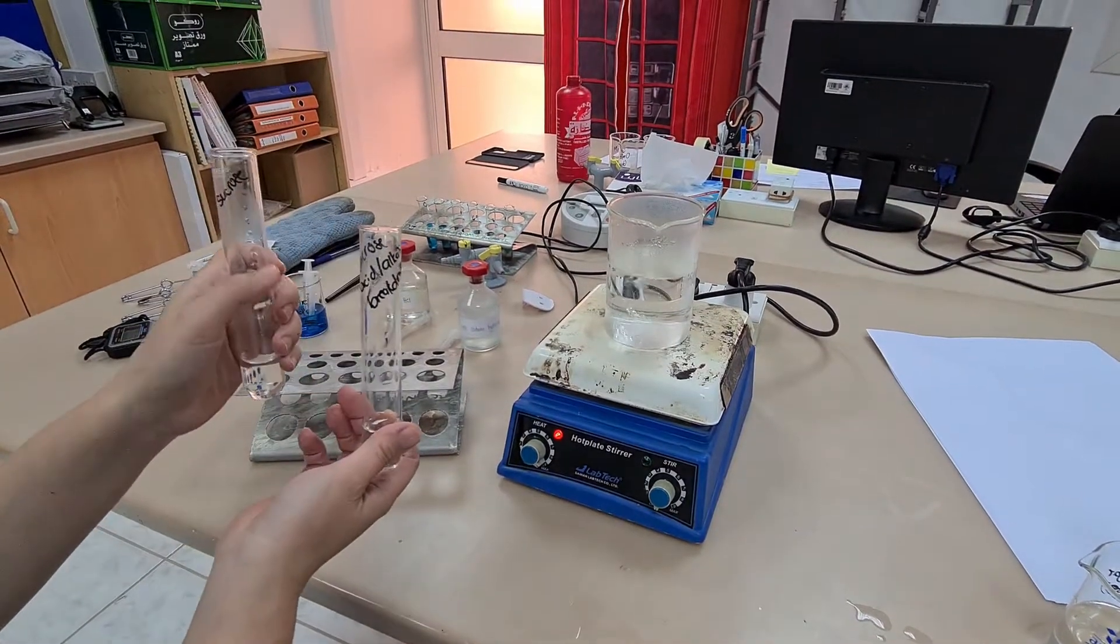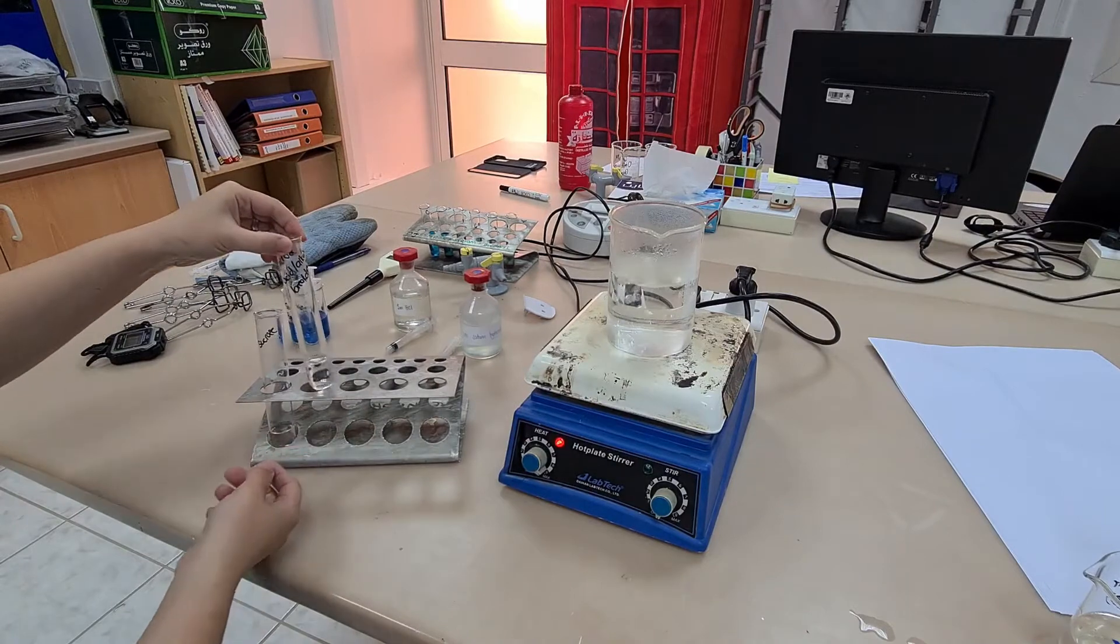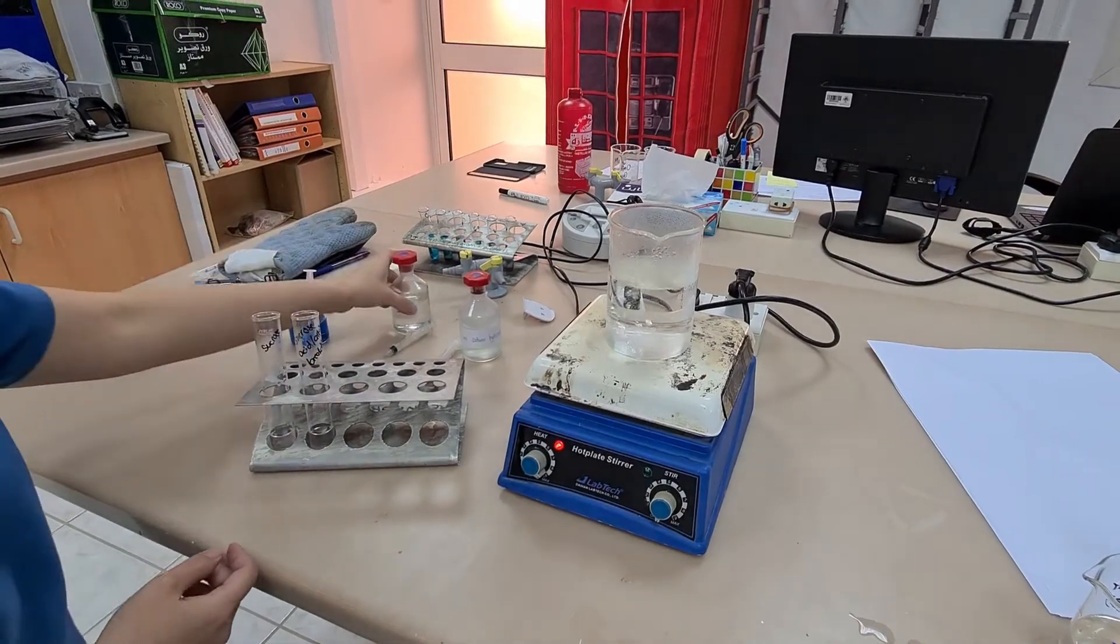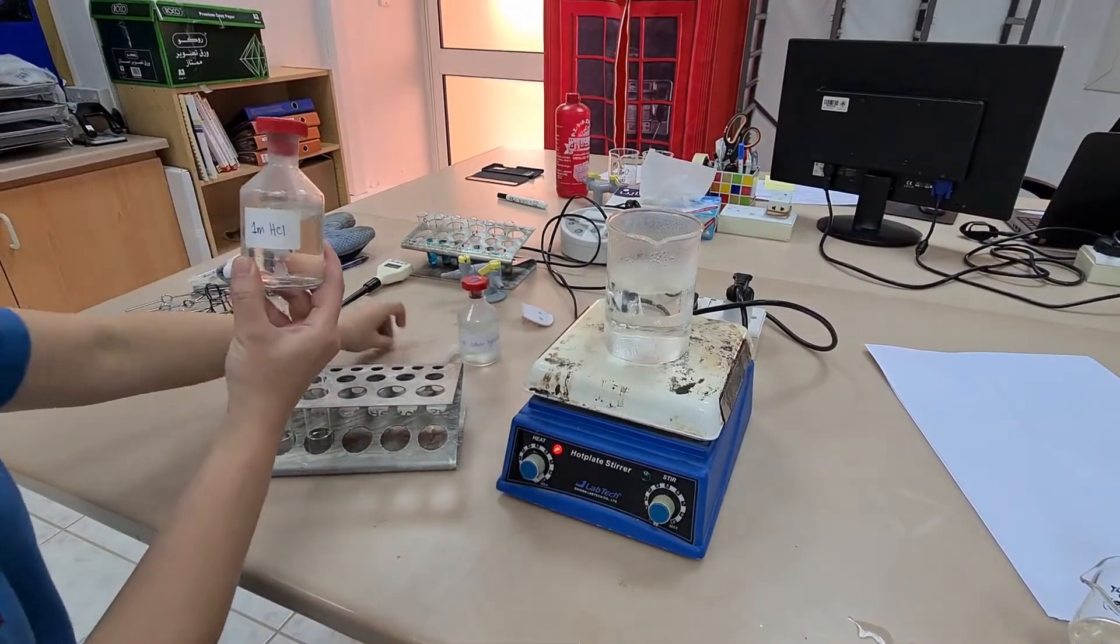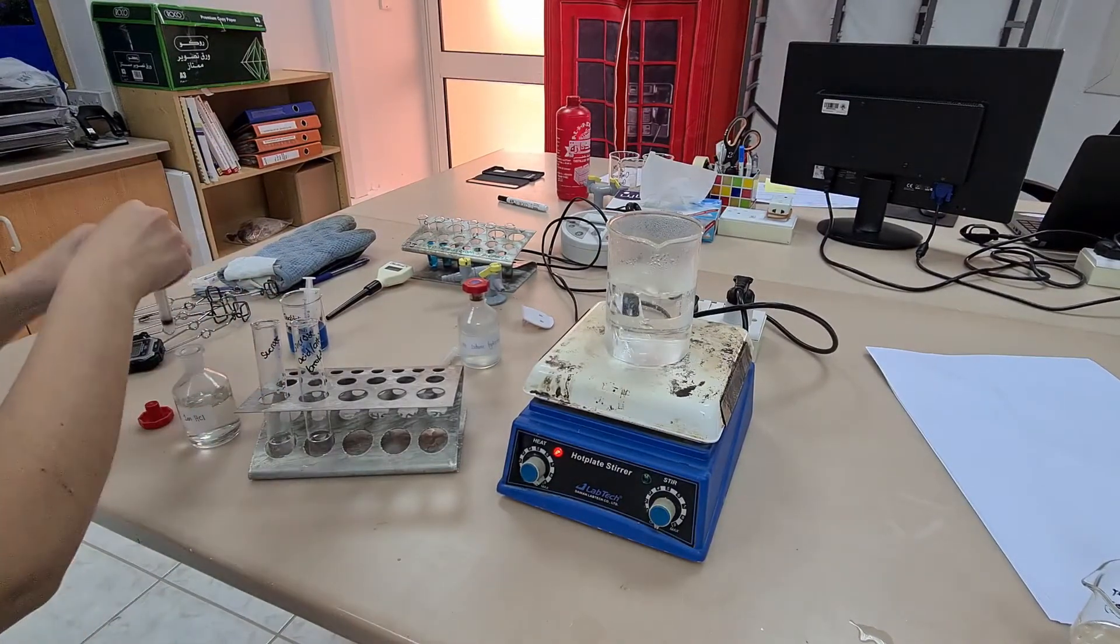We are doing a chemical test for disaccharides. I have sucrose solution in both test tubes. If I tested these both now I would get a negative result, but in one test tube I'm going to add some one molar hydrochloric acid.